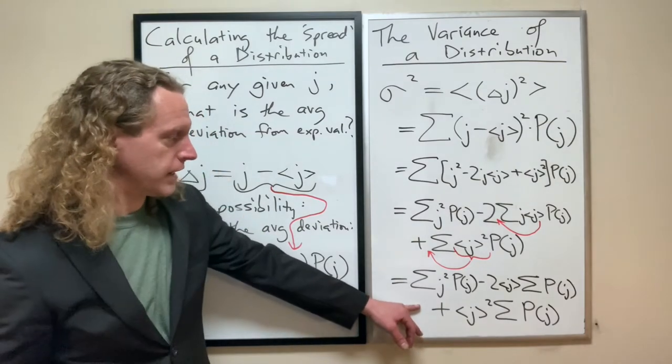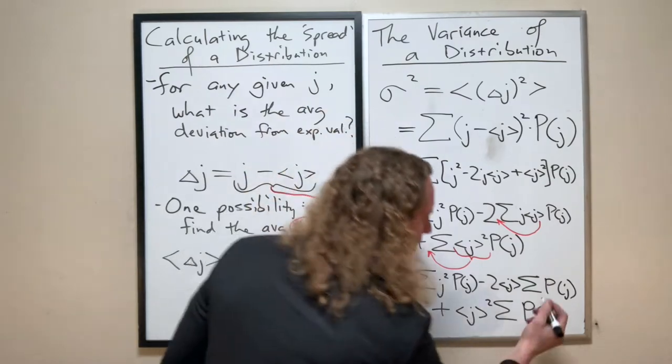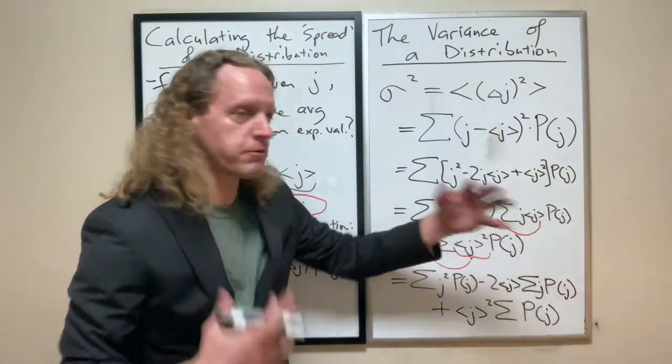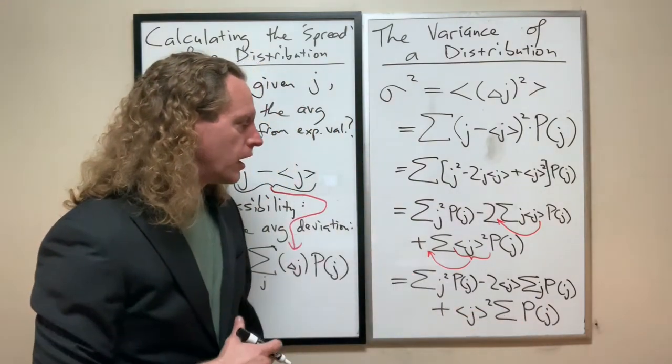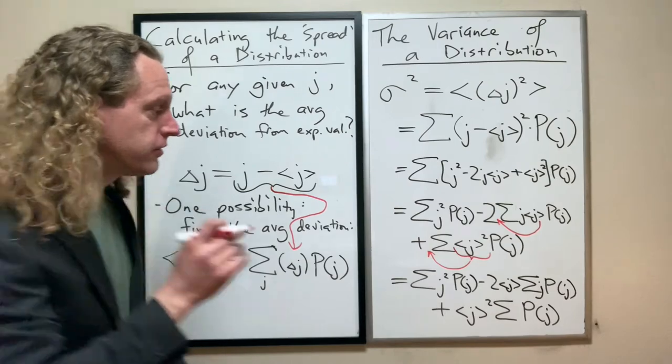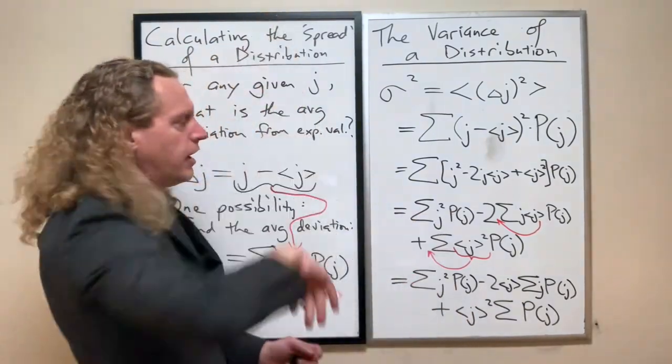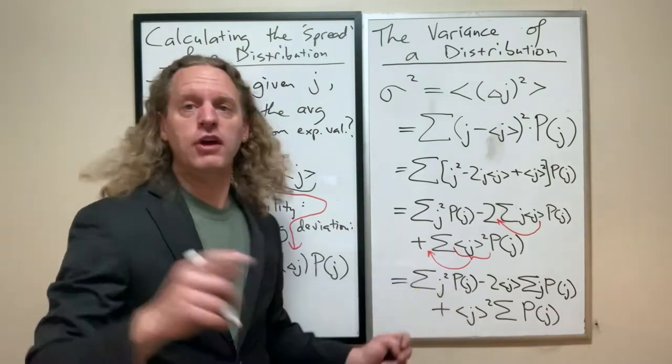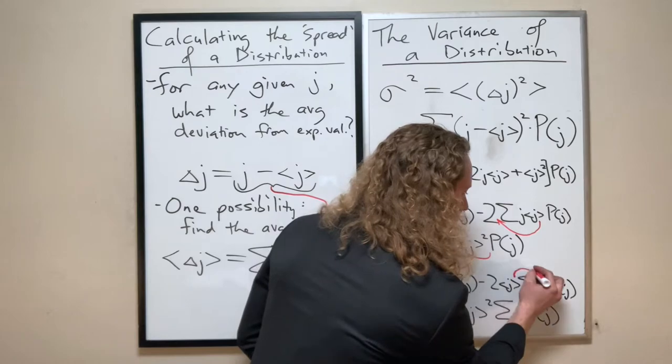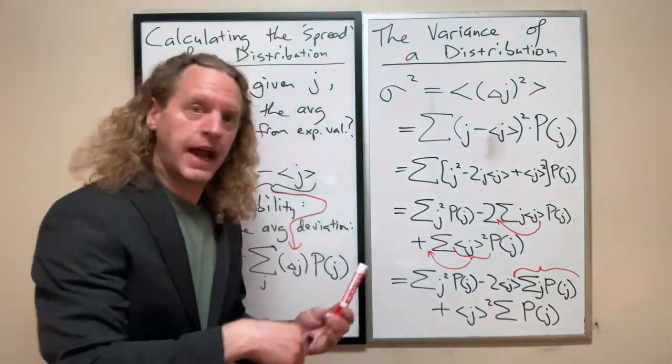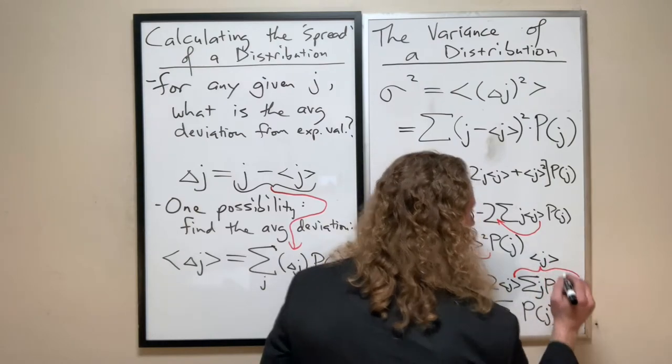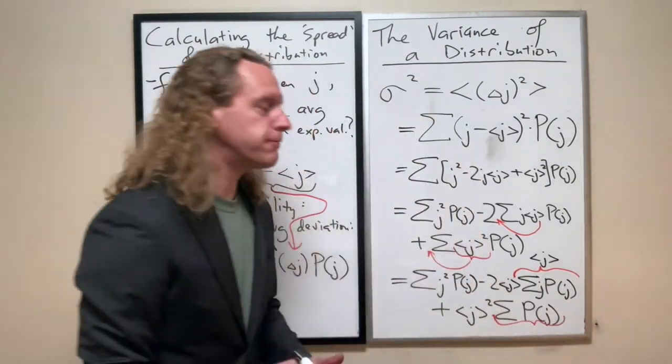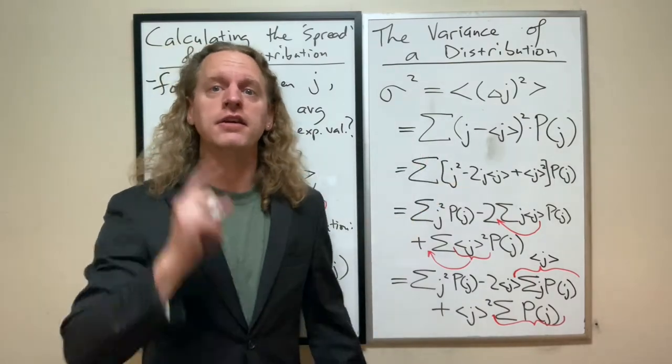One thing to note, and this is really important. As we mentioned before, whenever you see the expectation value, that's a constant. That's already been calculated for your distribution. So what I can do here is on the last term, I can pull that out in front of that summation. In our case, it's 10.05 each time, the only thing that changes is the probability. If you add up all the probabilities of everything happening, you're guaranteed something has happened. One.